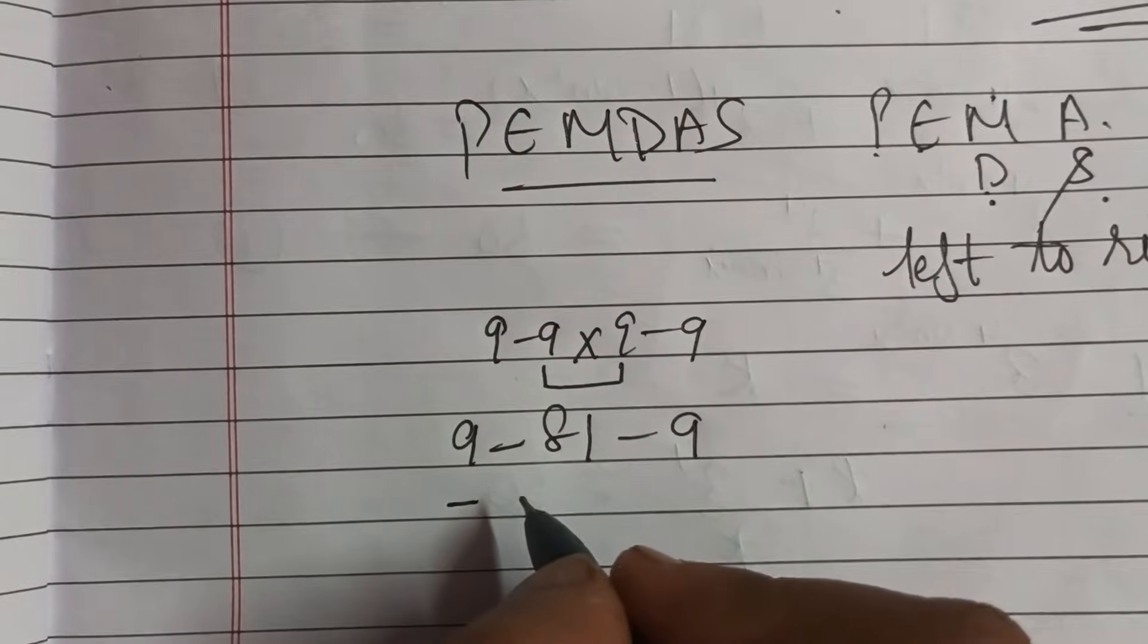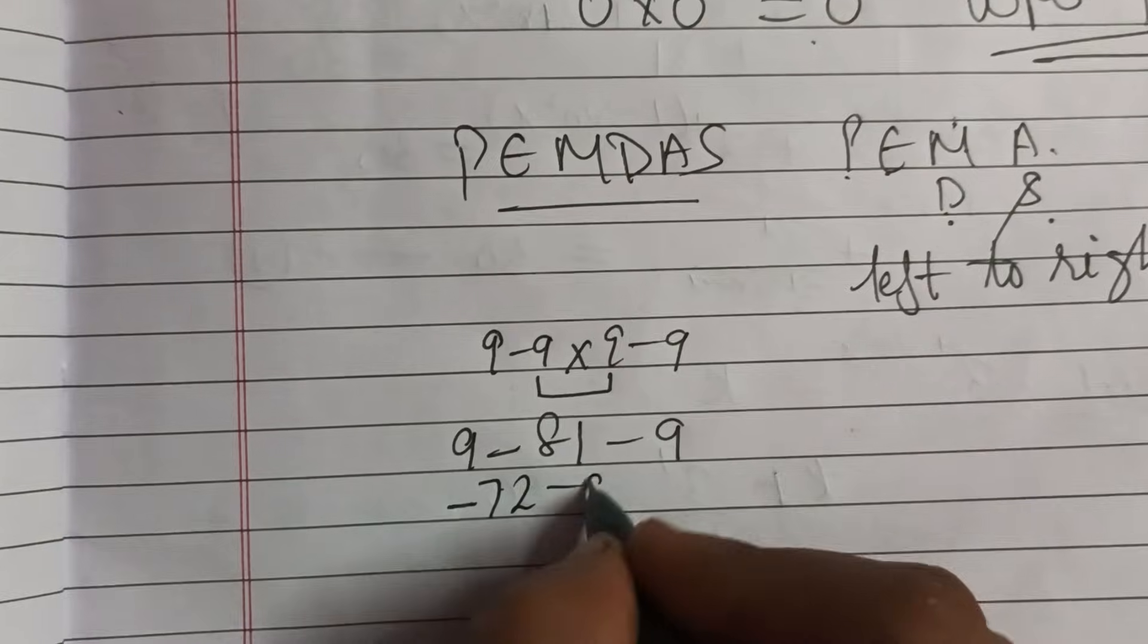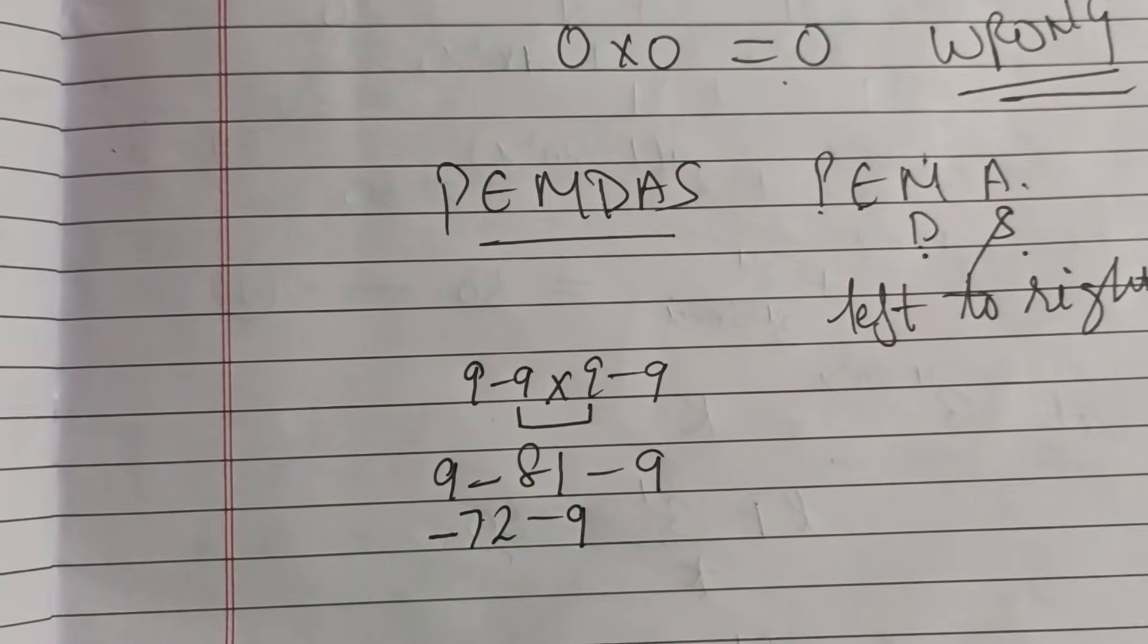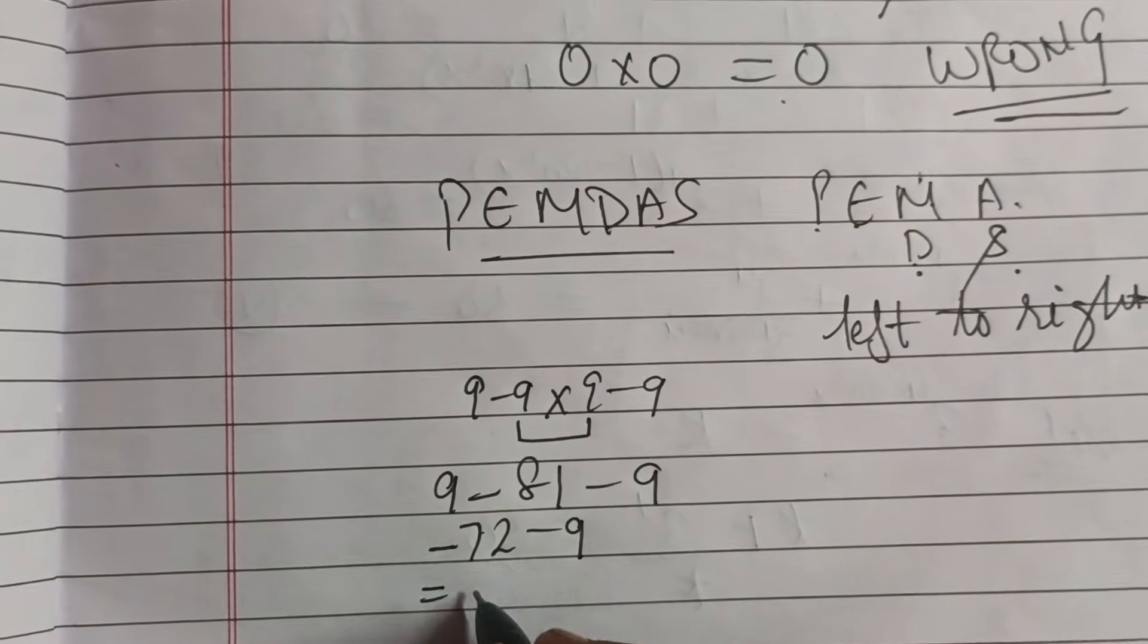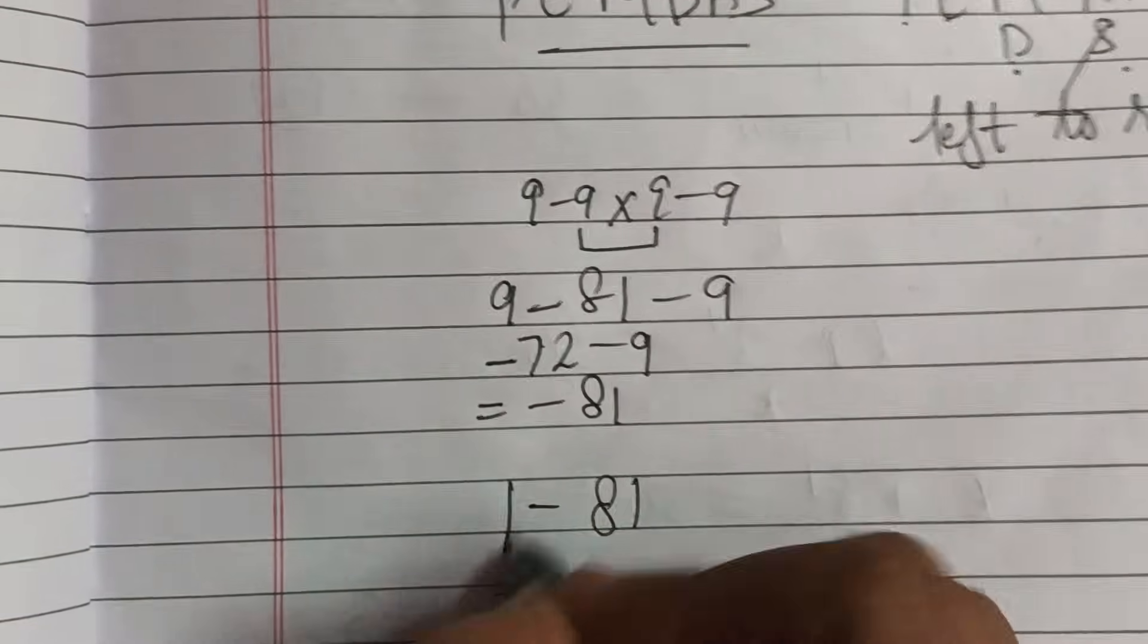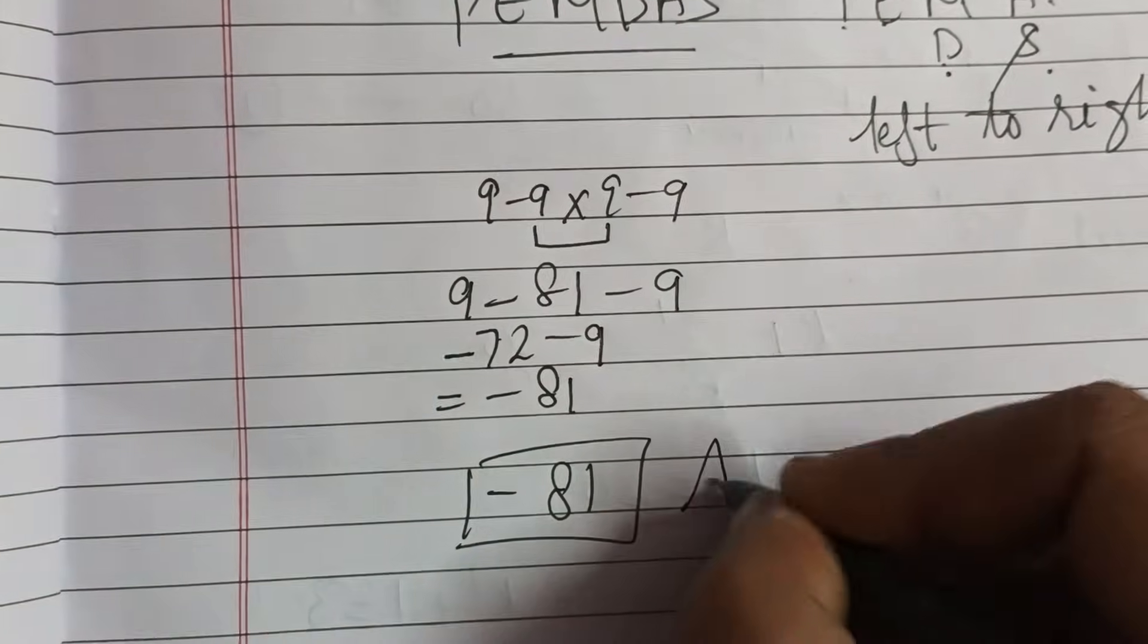Minus of 72. Again, minus 72 minus 9 is minus of 81. So now, if you get the result is minus 81, then your answer is correct.